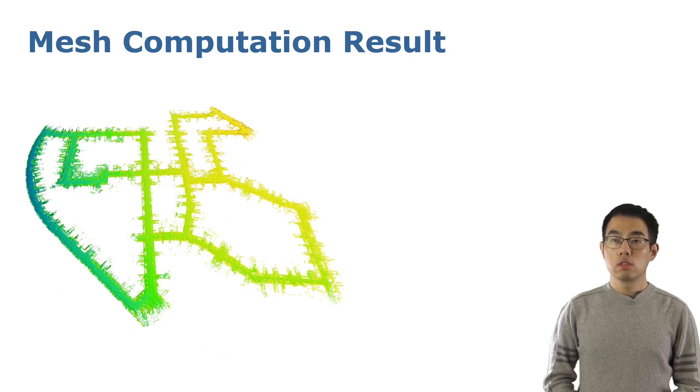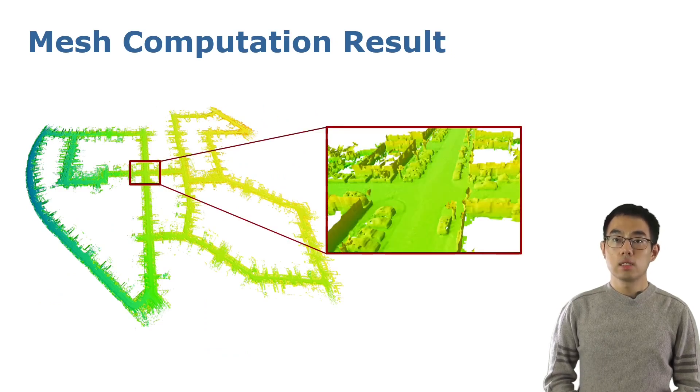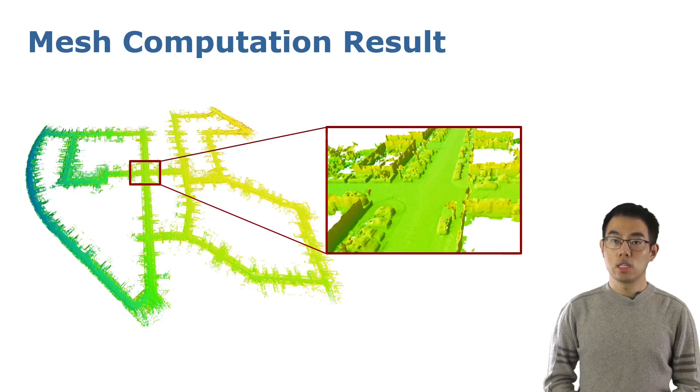After training converges, we use the marching cubes algorithm to extract mesh from our implicit field. As shown, our method can reconstruct really large scenes with rich details.